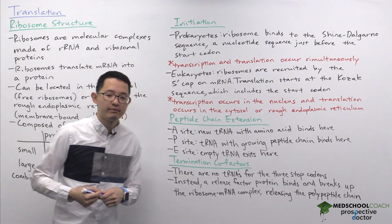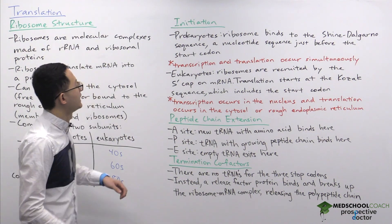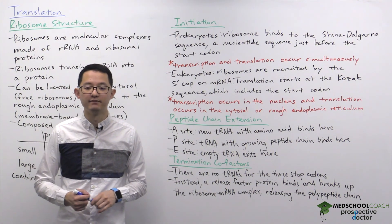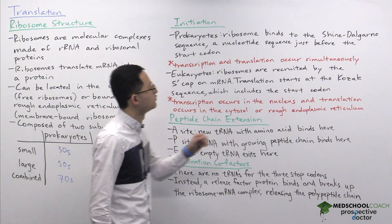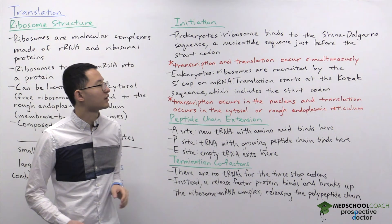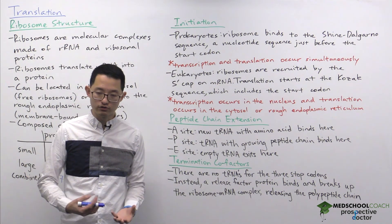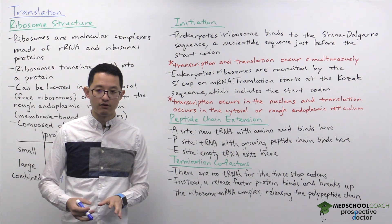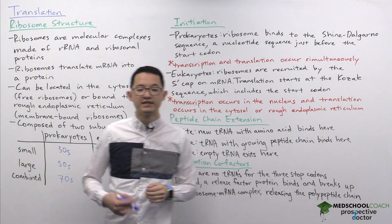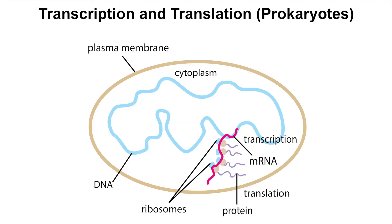Now that we know the structure of a ribosome, let's talk about how a ribosome actually translates a protein. The first step is initiation, and there is a difference here between prokaryotes and eukaryotes. In prokaryotes, ribosomes bind to what is called the Shine-Dalgarno sequence, a specific sequence of nucleotides just before the start codon, which recruits the ribosome to an mRNA molecule. Additionally, in prokaryotes, transcription and translation occur simultaneously — as the RNA polymerase is producing the mRNA, translation is already starting before the mRNA is finished.